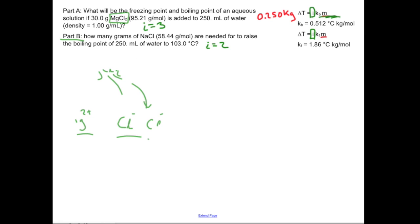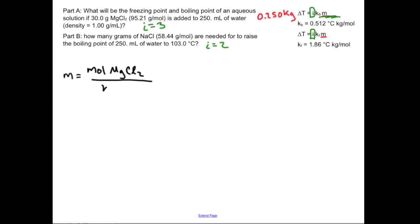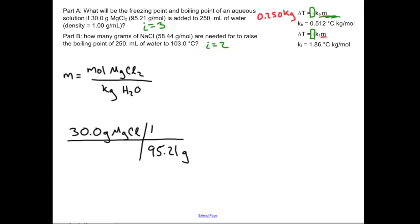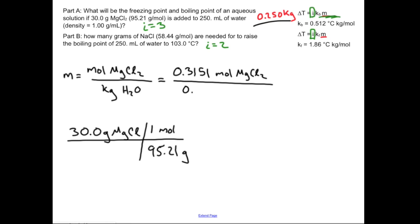Let's start cranking some numbers. First, let's find the molality for part A. It's going to be moles of magnesium chloride per kilogram of H₂O. I'm putting in 30 grams of magnesium chloride, then I just need to use my molar mass to get to moles. After the conversion, that's 0.315 moles of magnesium chloride. We already calculated 0.250 kilograms of water, so my molality is going to be 1.26 m — molal.